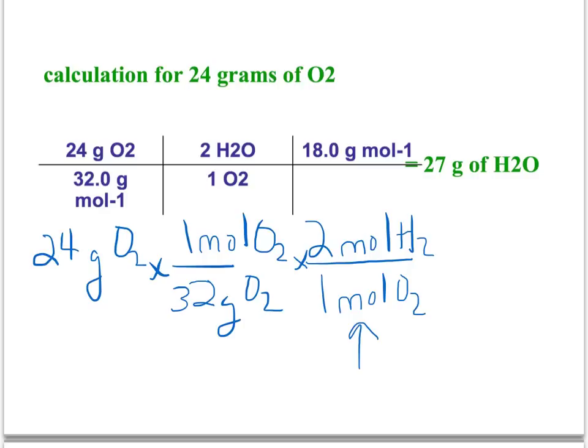So this step right here is the only time you'll use a mole ratio other than one to one, or a mole number other than one to one. When you're going from one substance to another, you use the numbers from the balanced equation. You don't in any other step.